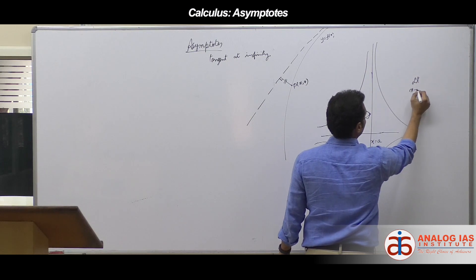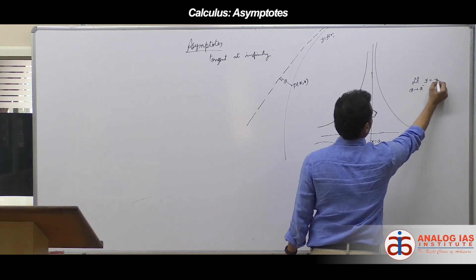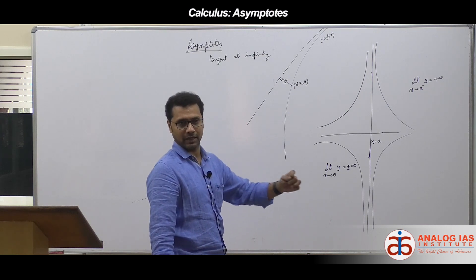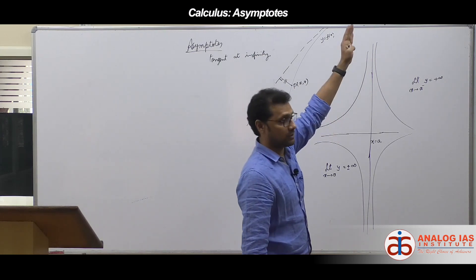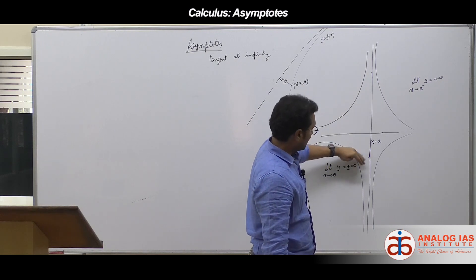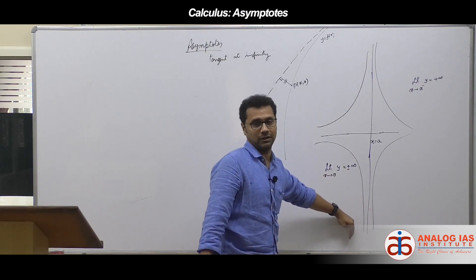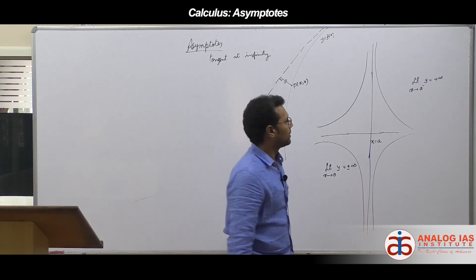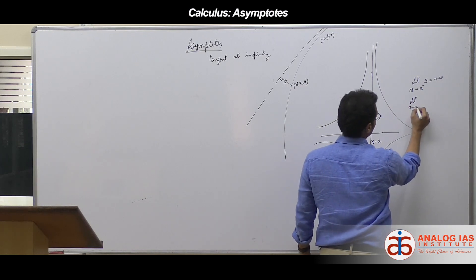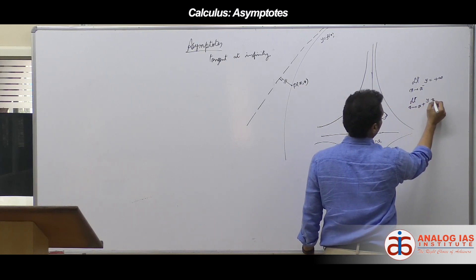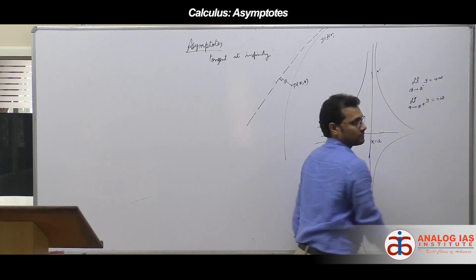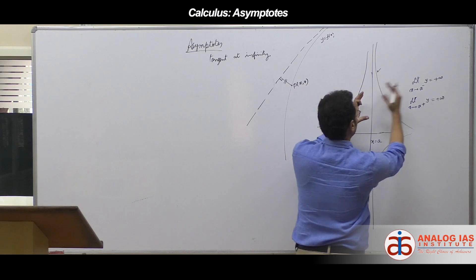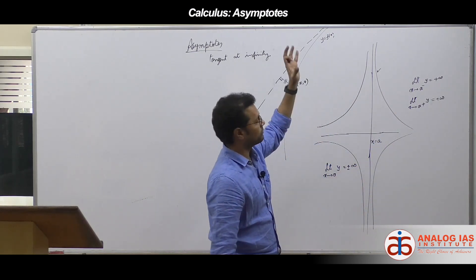As limit x tends to a⁻, y is going to plus infinity. And limit x tends to a⁻ — from the left-hand side of a — y is going to plus infinity. Also, limit x tends to a⁻, y going to minus infinity gives a different aspect of the curve. If limit x tends to a⁺ and y goes to plus infinity, then I have that aspect of the curve. Whether the curve lies this side, that side, above, or below — whether there are vertical asymptotes or not — these are crucial elements in tracing curves.